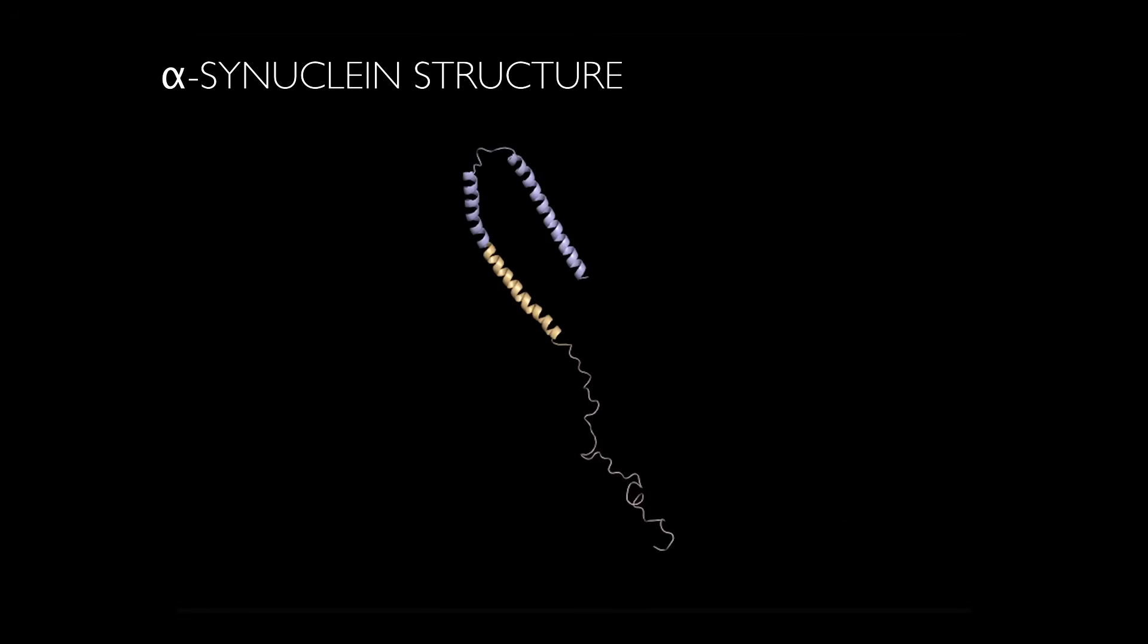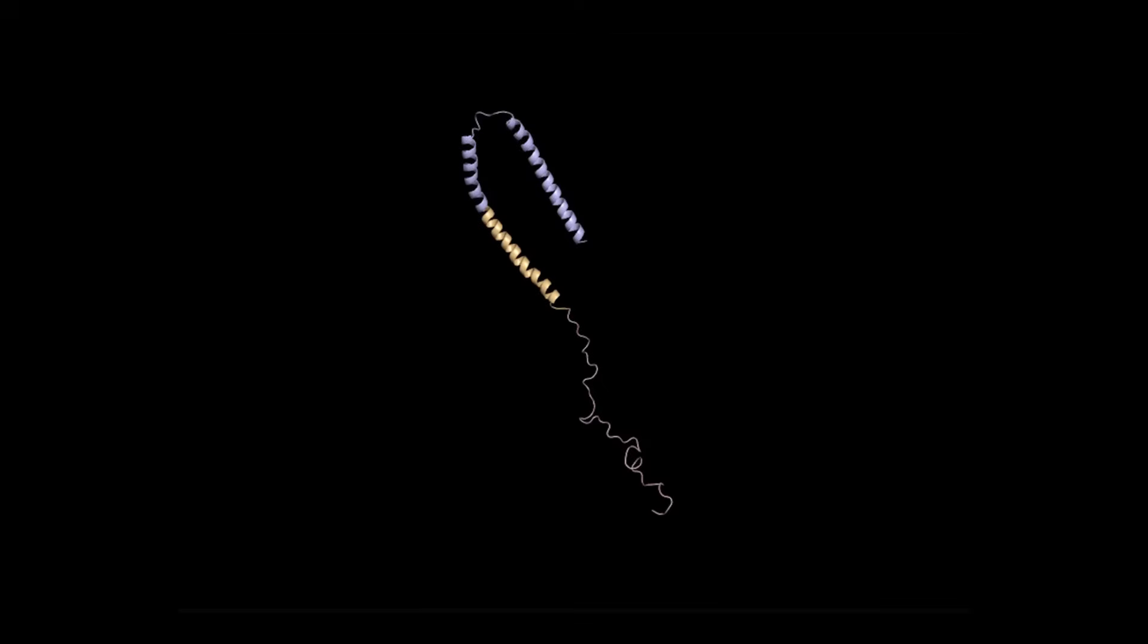As alpha-synuclein is a major constituent of Lewy bodies, let's now explore its structure in detail. Alpha-synuclein is a 140-residue protein that, although natively unfolded, commonly assumes a random coil conformation. The protein has three domains.